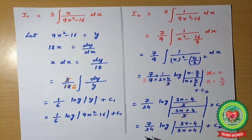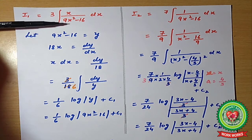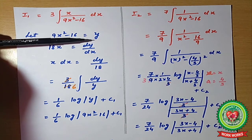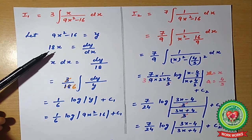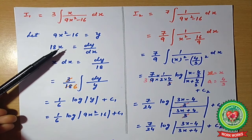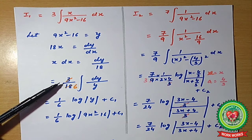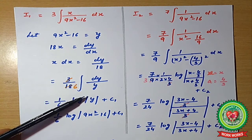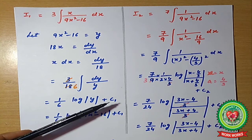After cancelling, I2 = (7/24) log|(3x − 4)/(3x + 4)| + C2. For I1, we use substitution: let y = 9x² − 16. Differentiating, 18x = dy/dx, so x dx = dy/18. Then I1 = (3/18) ∫ dy/y = (1/6) log|y| + C1 = (1/6) log|9x² − 16| + C1.